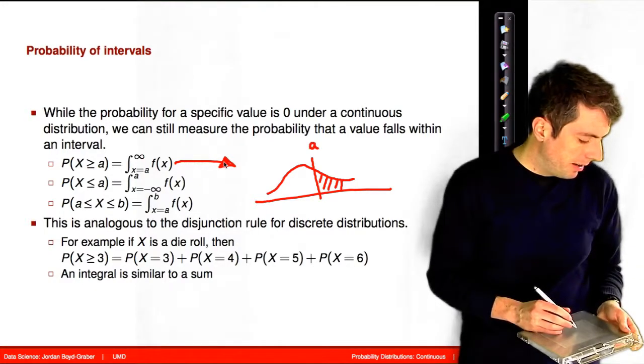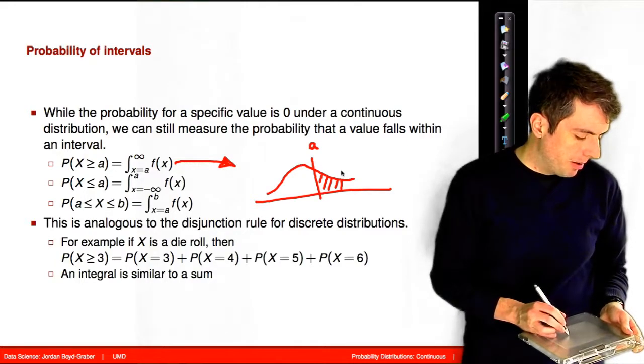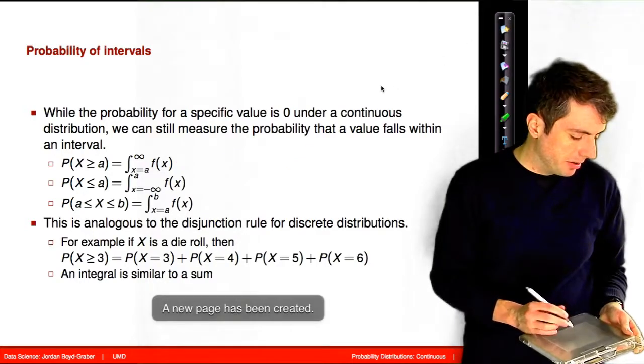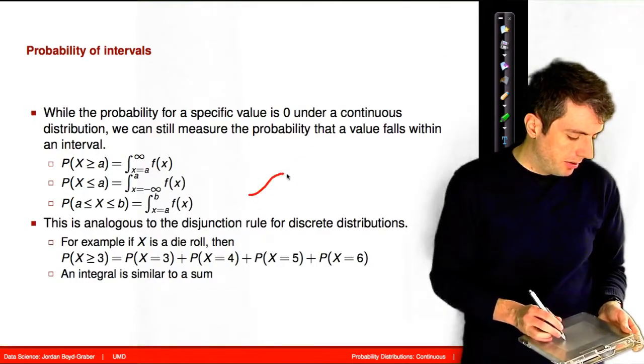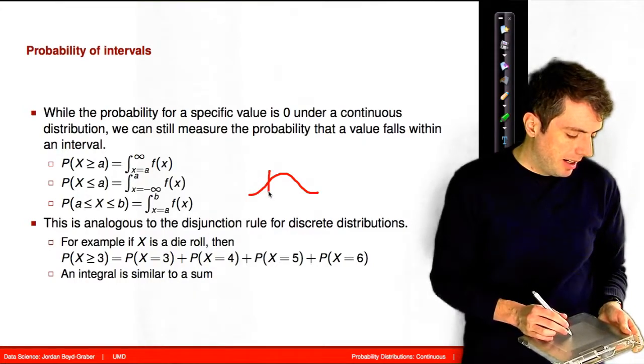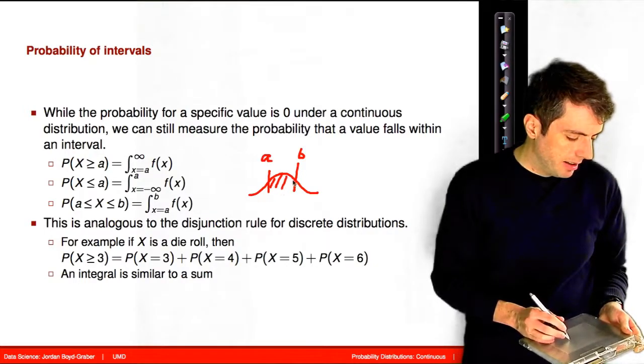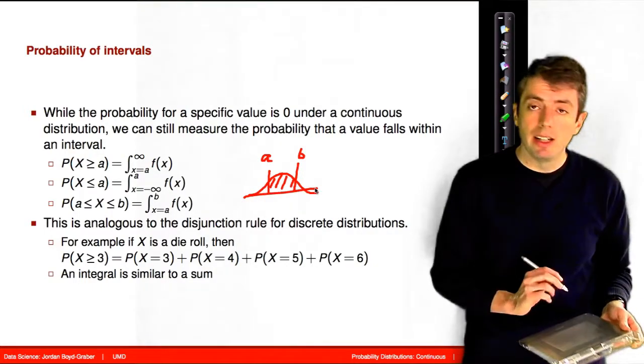And if you then want to know the probability between two values, that corresponds to an integral between two points. So if you want to know the probability of lying between a and b, that is the integral between those two points and taking all of the area under that curve.